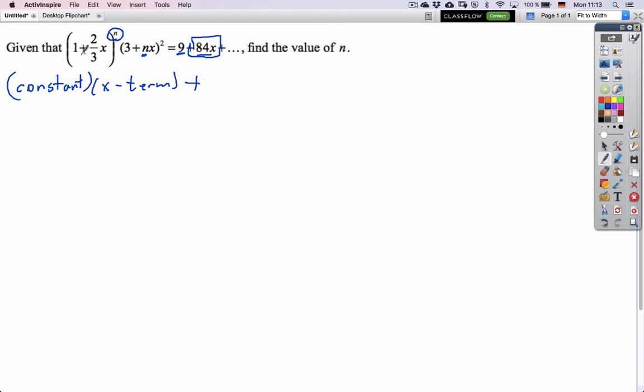Then we could also get the x term of that first expansion and multiply it by the constant of the second one. Nothing else will give us this x that eventually will be 84x, so the 84 is the number we want.